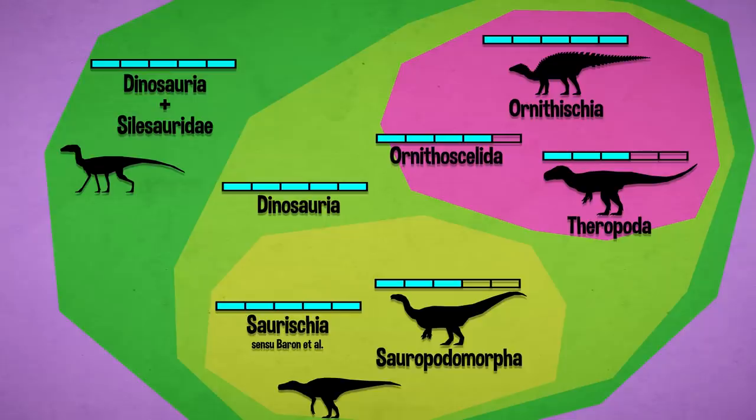They did find that some poorly known dinosauromorphs lowered the Bremer support for certain clades. Surprisingly, this includes Dinosauria itself.